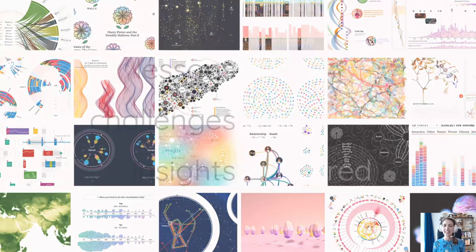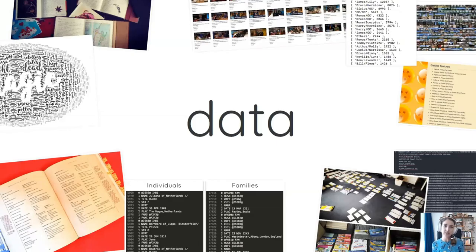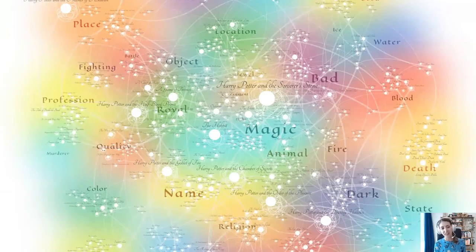A question we often got was: how did you find the data? But it's not really the data that leads us - it's the topic of each month that first provides a spark of an idea, an insight we might want to reveal, and then how we could visualize that. Only once we have that more concrete angle do we investigate to see if we can find appropriate data. For example, for November the topic was books, which is pretty broad, but I really wanted to focus on fantasy books and more specifically on the themes in titles of fantasy books.